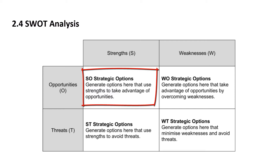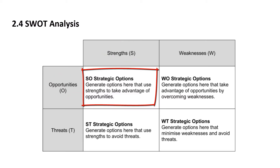Let's take the top-left option of strengths and opportunities — SO. An example would be that we have great economies of scale, which is our strength, and that there is a new market space arising, which is an opportunity. We now have to develop a strategy saying, for example, that thanks to our economies of scale and low costs, we will be able to exploit this new market space better than our competitors. This is a finalized SWOT analysis.